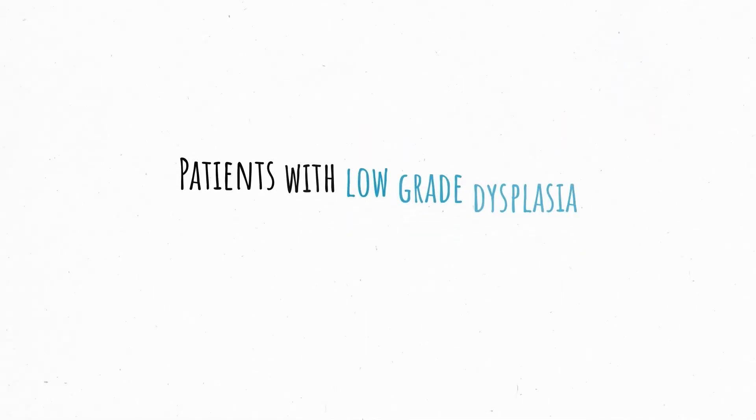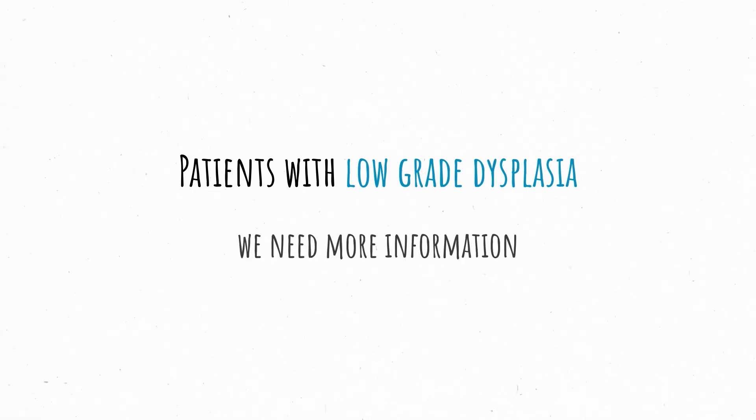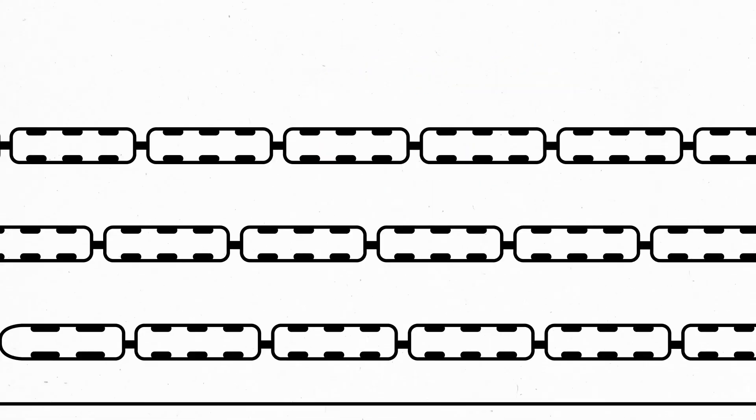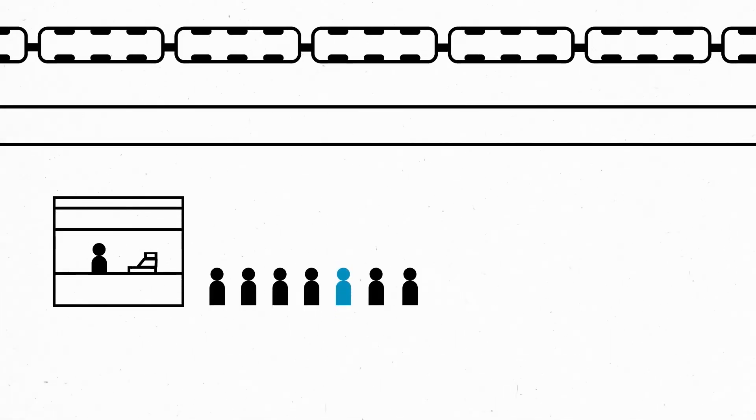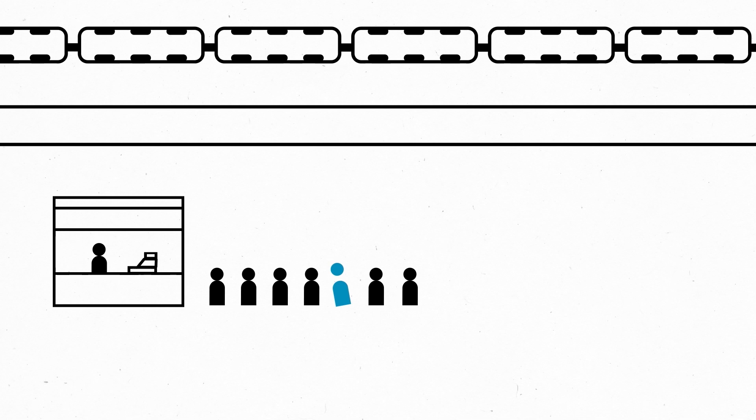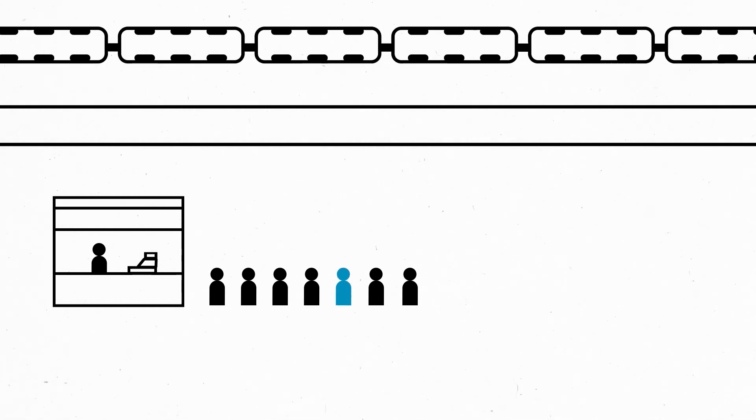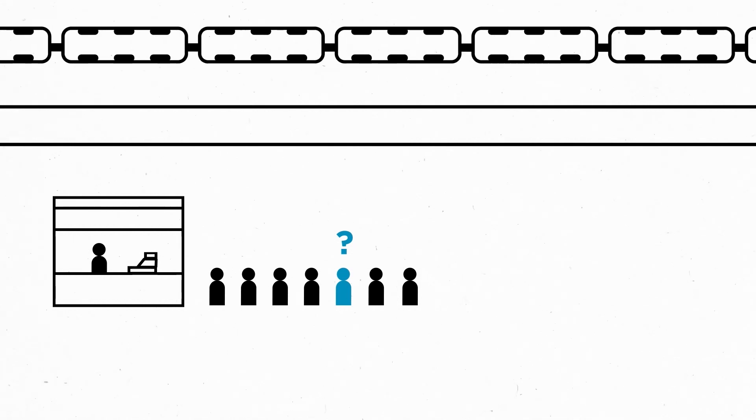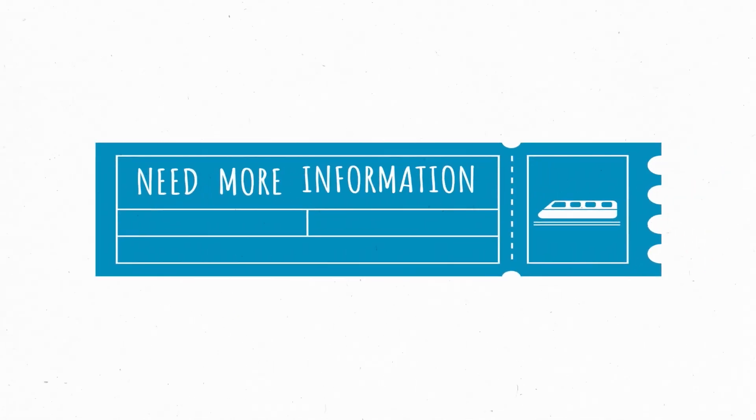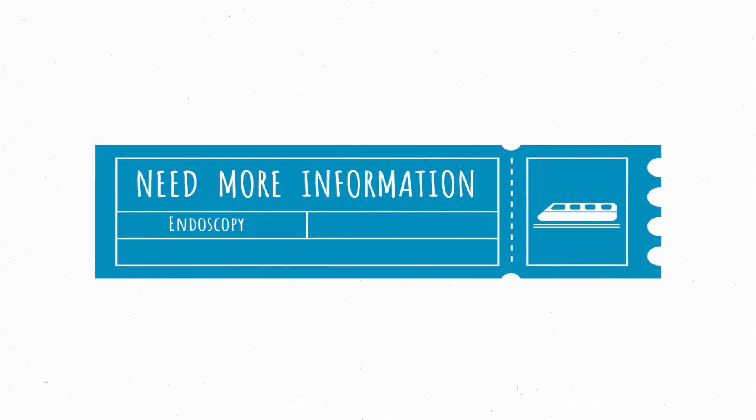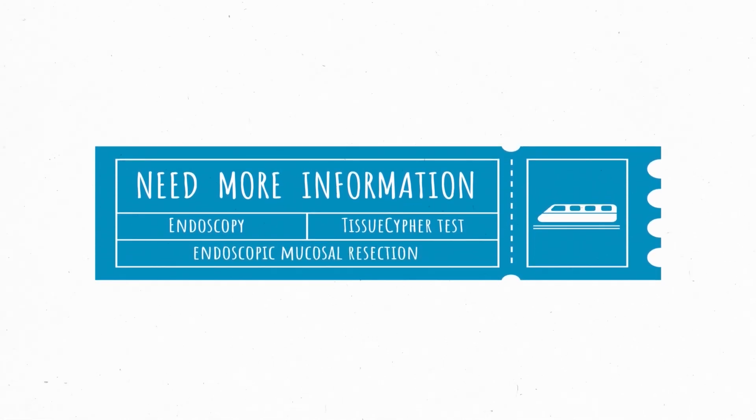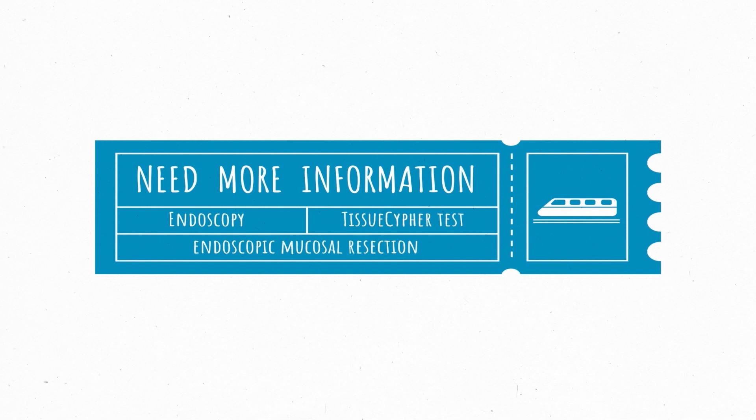For those patients who have low-grade dysplasia, we need more information to determine if you're high or low risk to go on to develop cancer. It is like you're in a ticket line. You may be getting on that train and it is the right time, but we don't know that you'll actually get on that train. We might need more information by looking at your ticket, by doing another endoscopy, a tissue cipher test, or doing an endoscopic mucosal resection of a lesion before deciding about therapy.